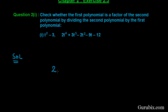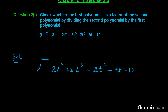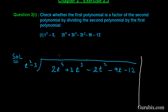First of all we shall write the dividend, which is 4t raised to the fourth power plus 3t cubed minus 2t squared minus 9t minus 12, and we have to divide this polynomial by t squared minus 3.